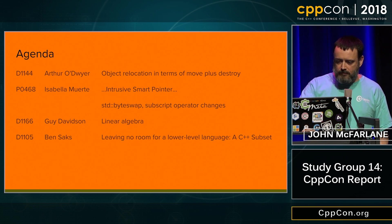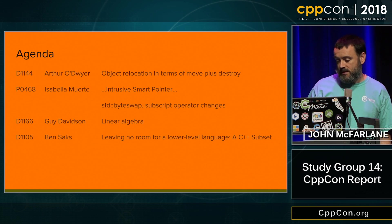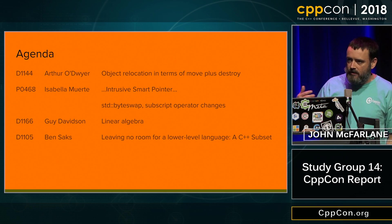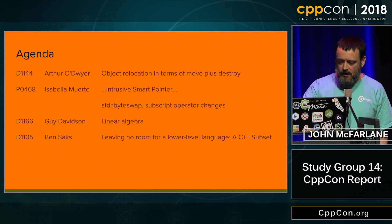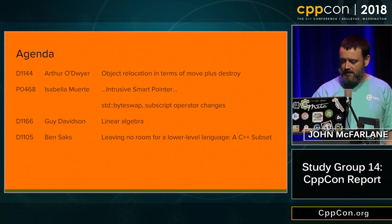Isabella presented a smart pointer paper — basically very useful for game developers. Say you have a COM object which is reference counted, but it's not reference counted by a control block that's part of the standard library. So this type of pointer would bring that kind of pointer into the fold, so to speak.